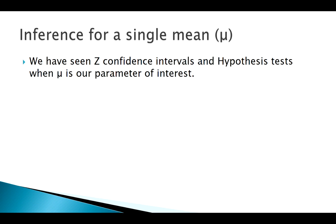The main thing that we've seen before is when mu is my parameter of interest and the central limit theorem checks out, we can do z-confidence intervals and z-hypothesis tests. All right, so you should feel pretty comfortable with the basics of those.